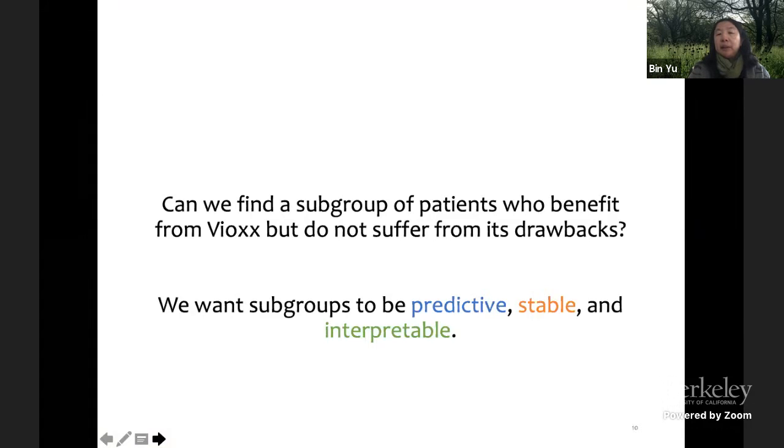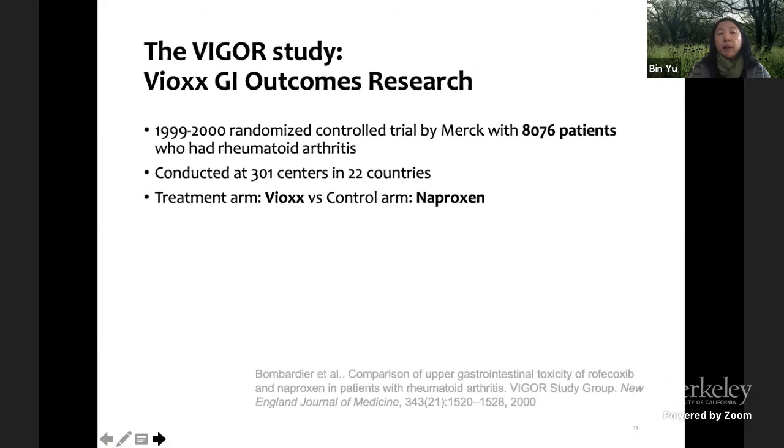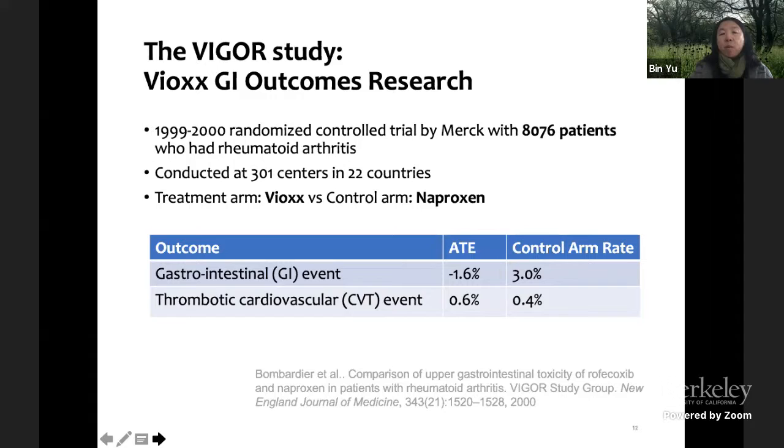And we take this predictive, stable, interpretable approach. As I said, this is about 8,000 patients. They're not just healthy people, they're actually patients with rheumatoid arthritis recruited from 300 centers in 22 countries. The control arm is another older drug called naproxen. And you can see that relative to naproxen, the GI event with Vioxx seems to be better, but for the cardiovascular event, it's worse.